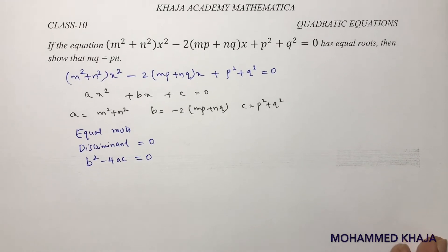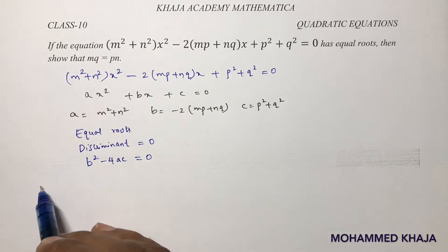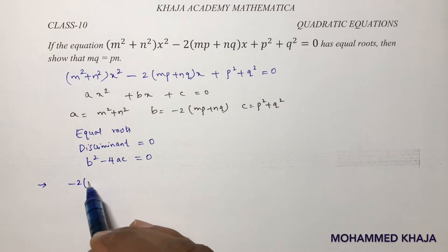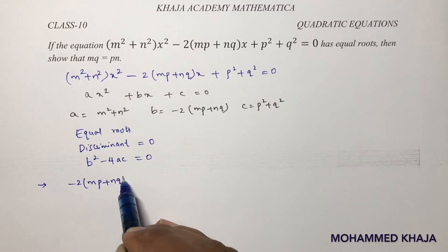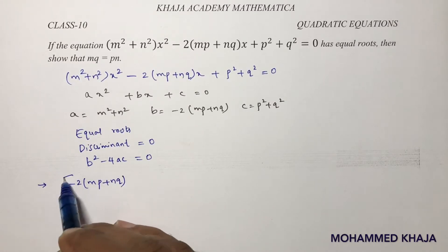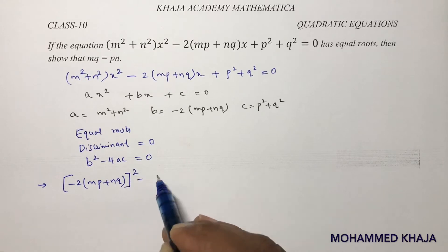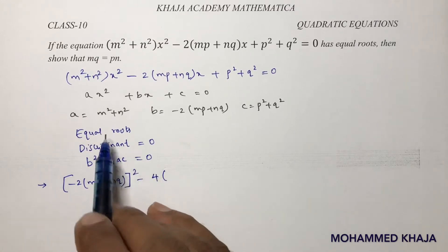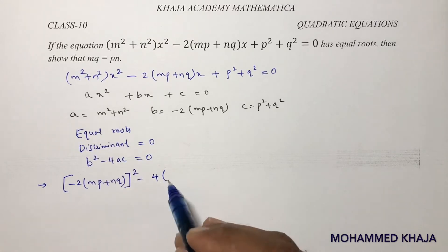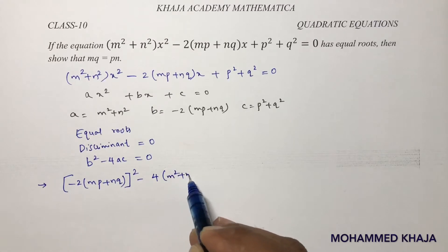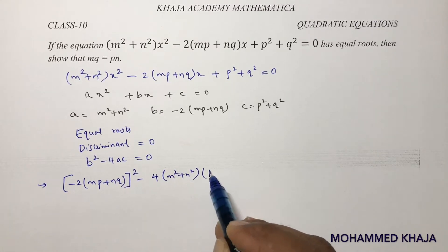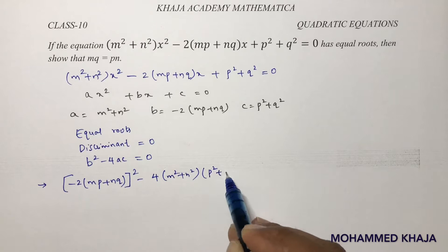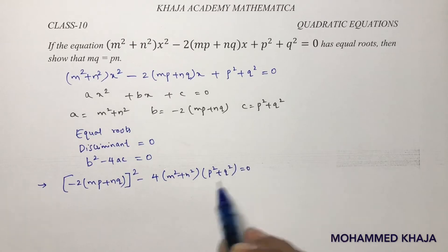Substituting the values: [−2(mp + n³)]² − 4(m² + n²)(p² + q²) = 0.